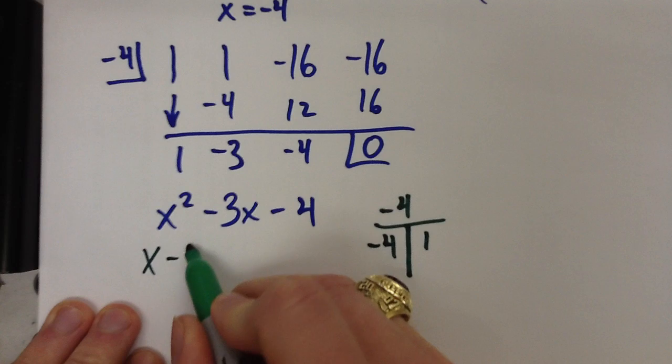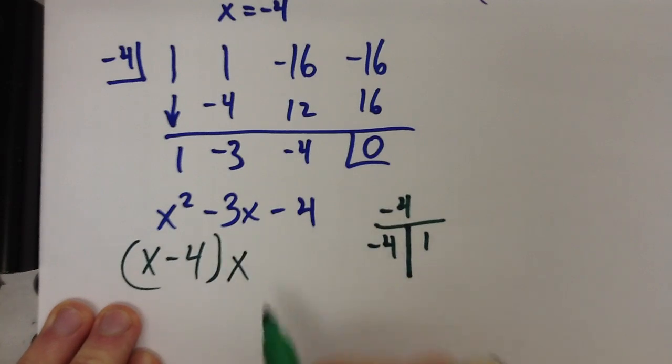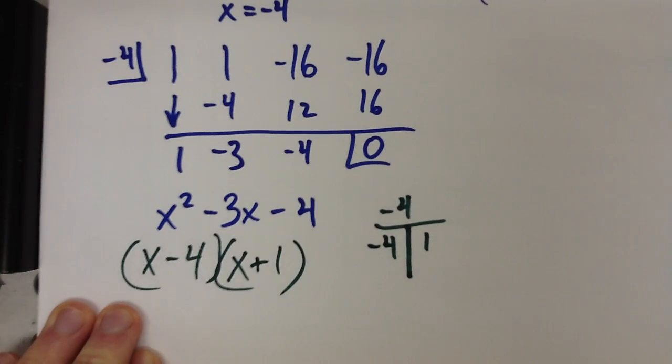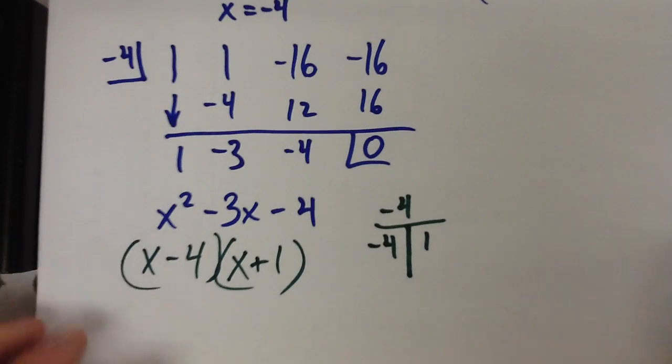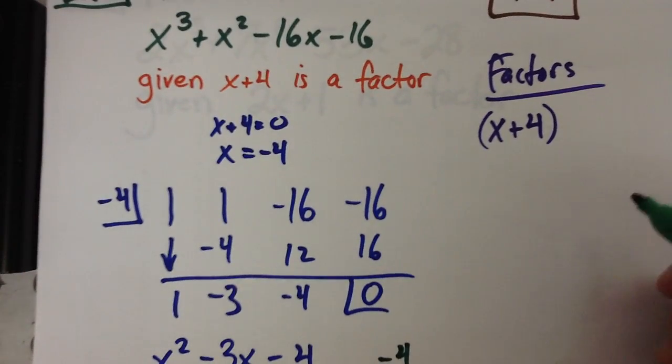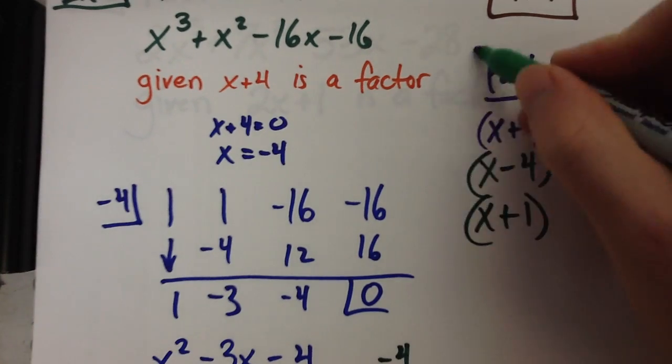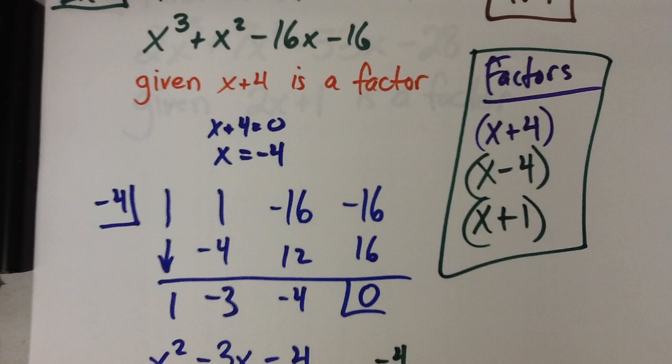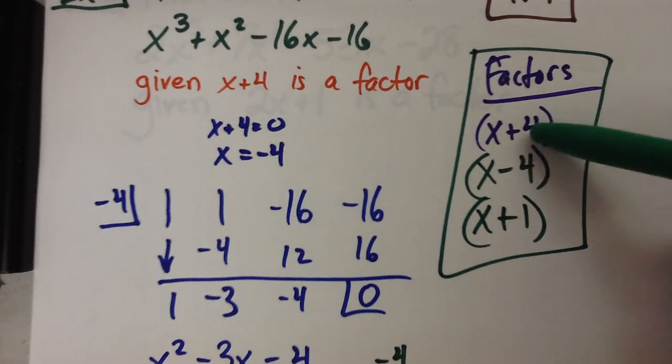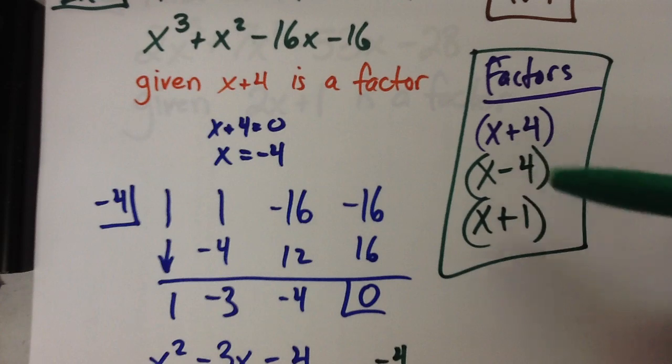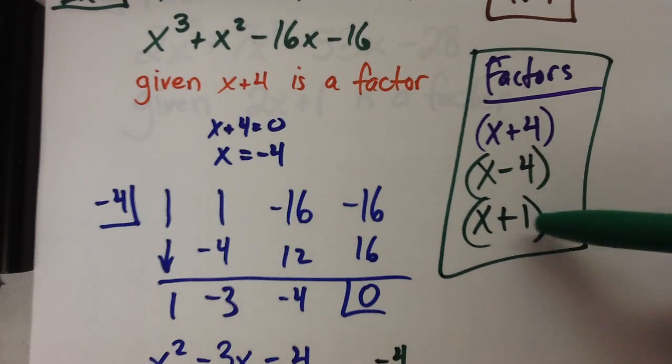So x minus 4 and x plus 1 would be your factors. So finish it up. Those are the factors I got, so put them up here. And that's it. I found all the factors. You can always foil these back out, do the first two first, and then foil that answer with the x plus 1.